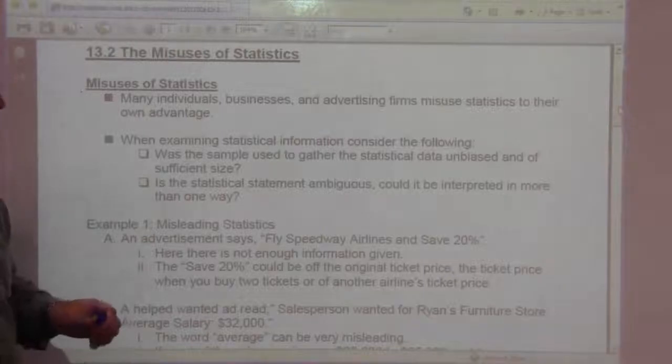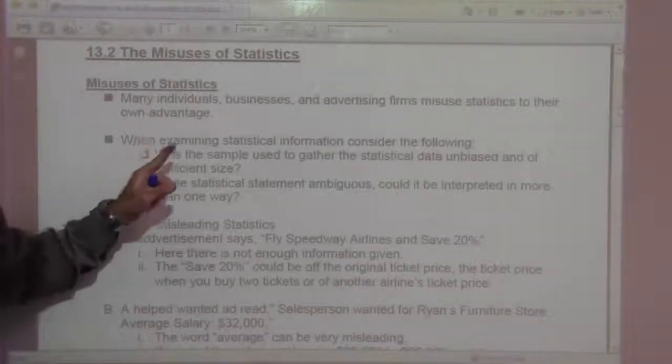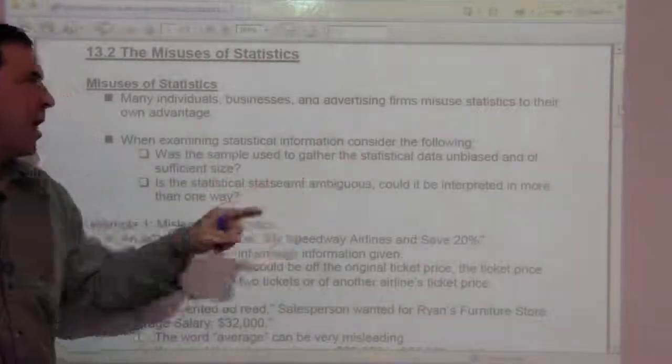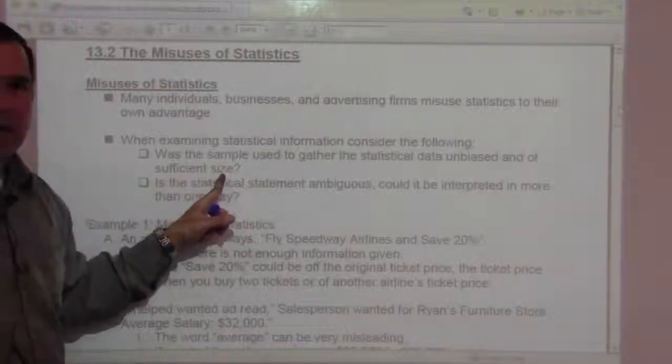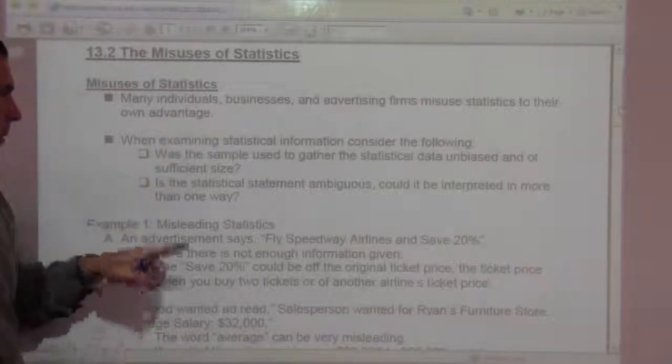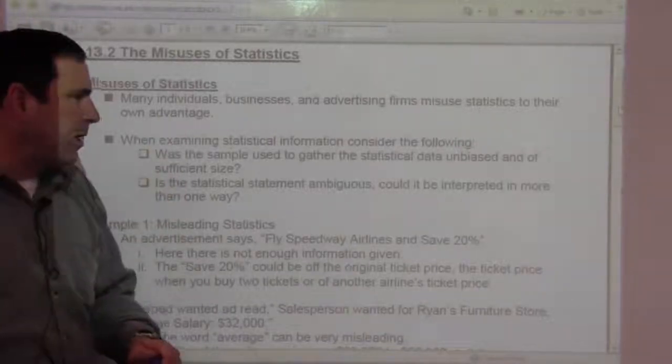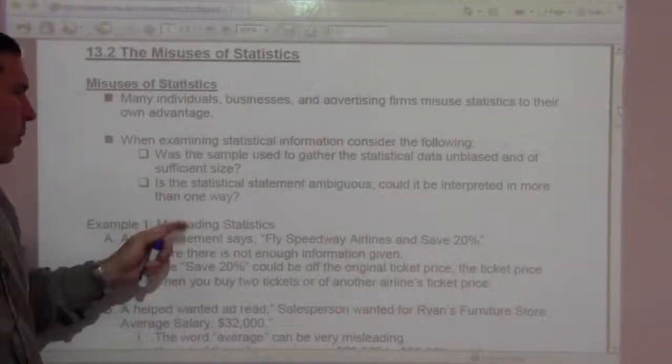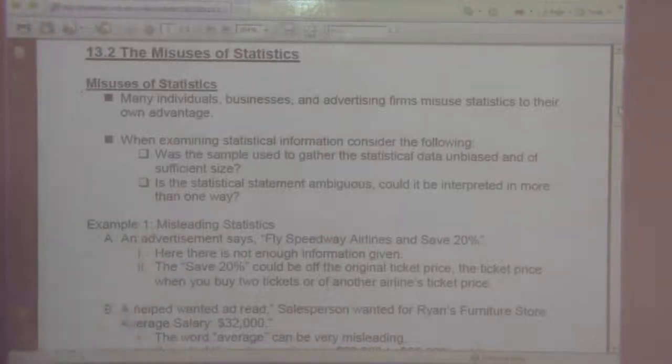When examining statistical information, consider the following. Was the sample used to gather the statistical data unbiased and of sufficient size? This is a big one, and I really watch politics a lot, so I see this all the time. Is the statistical statement ambiguous? Could it be interpreted in more than one way? And that's what they call spin.